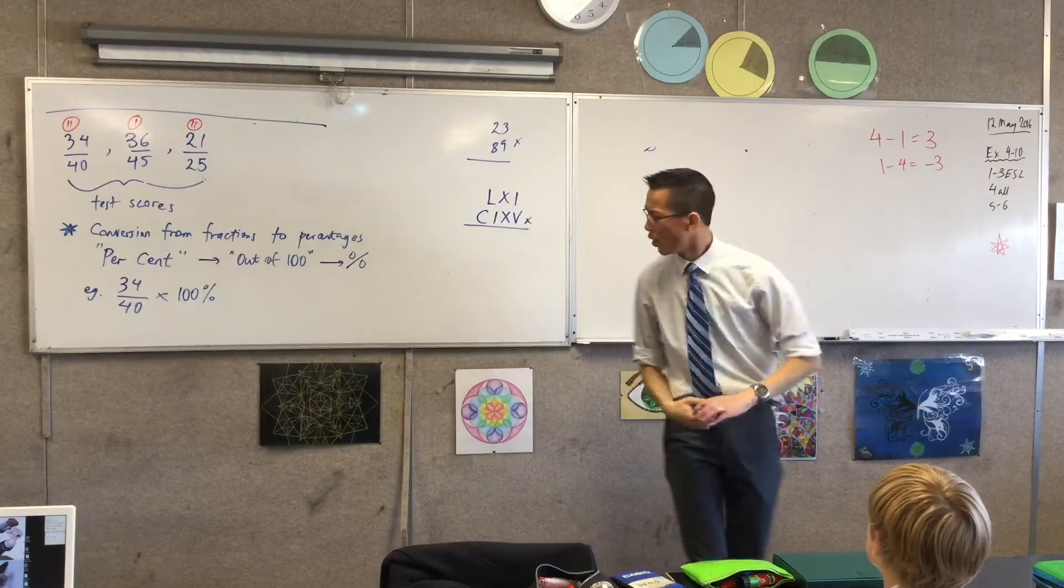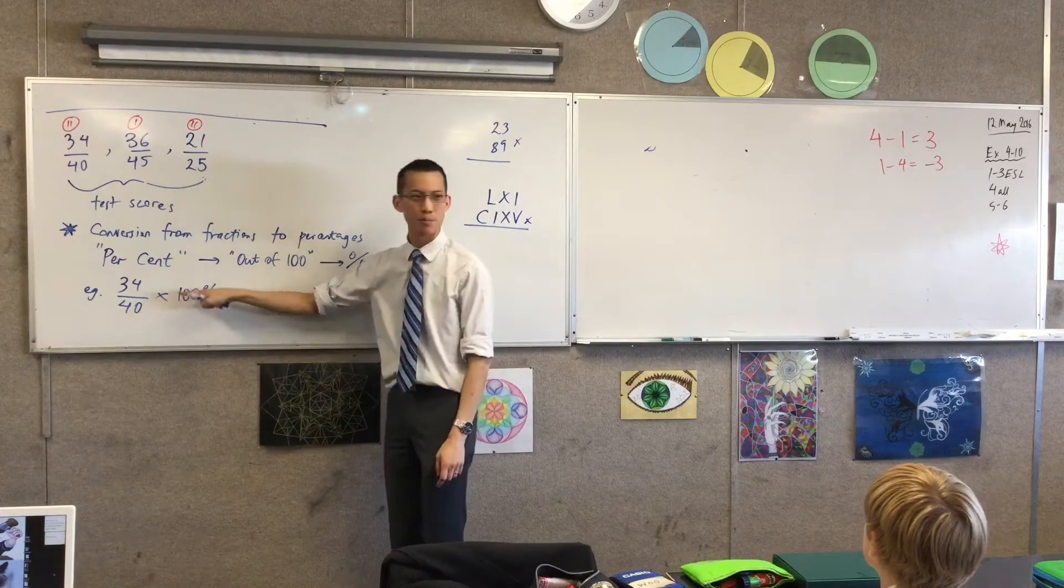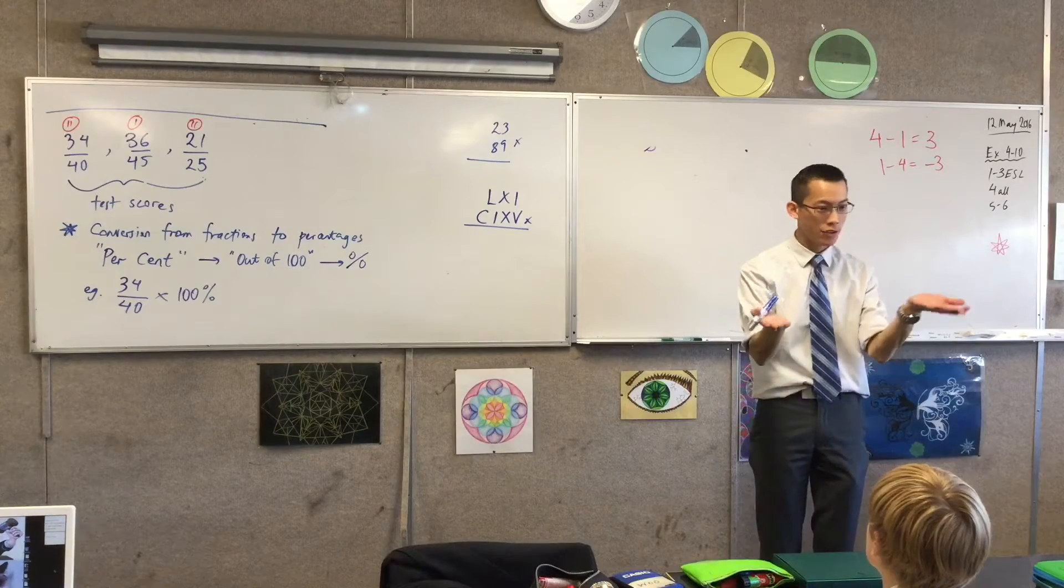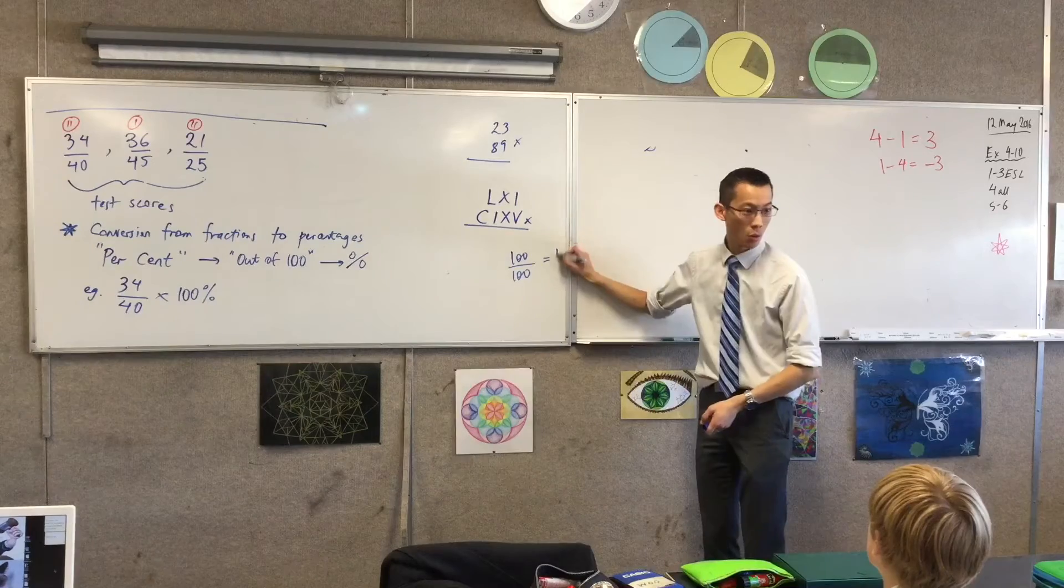Now hold on a second, we just said percent means out of 100. So what's 100%? It's 100 out of 100. 100 out of 100, you don't have to write this, but 100 divided by 100 is just 1.